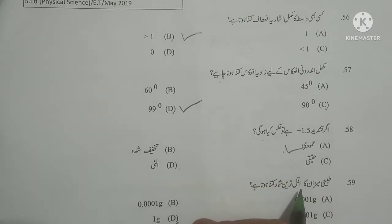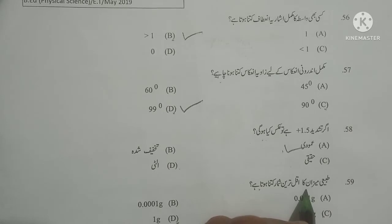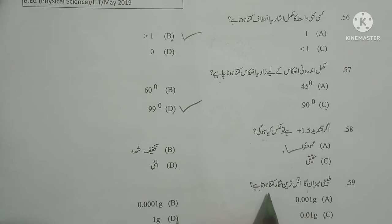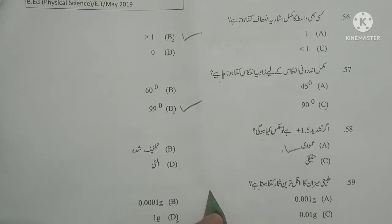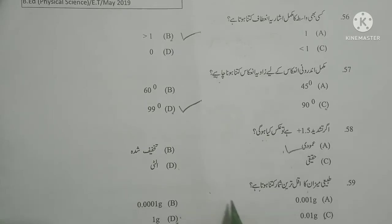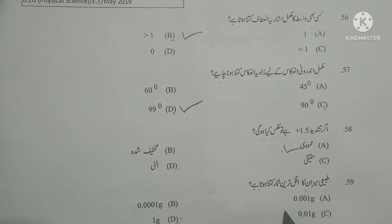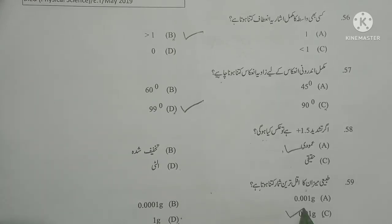Next question: Tabi ai mezaan ka akl tareen shumar kitna hota hai? Tabi ai mezaan means physical balance, akl tareen means least count. What is the least count of a physical balance — the minimum weight that can be measured? Here two options are possible: 0.01 gram and 1 gram. Since the range of the physical balance is not given, 0.01 gram is the least count of a physical balance.